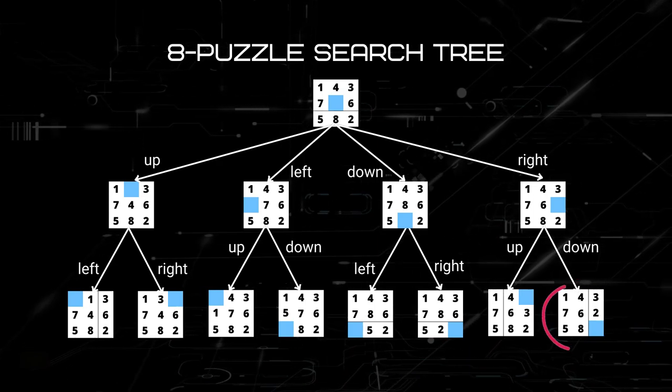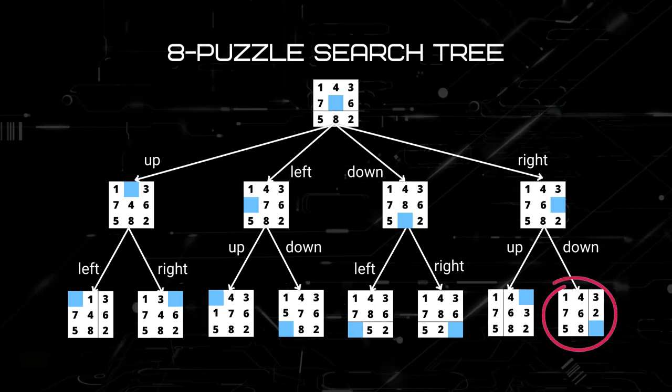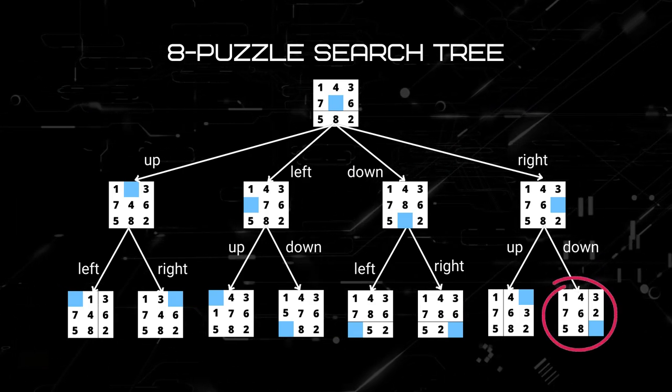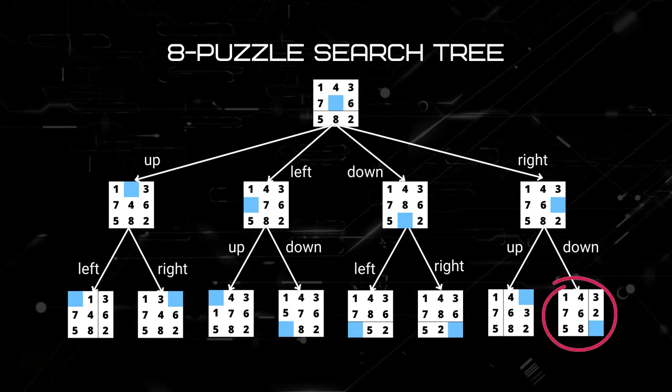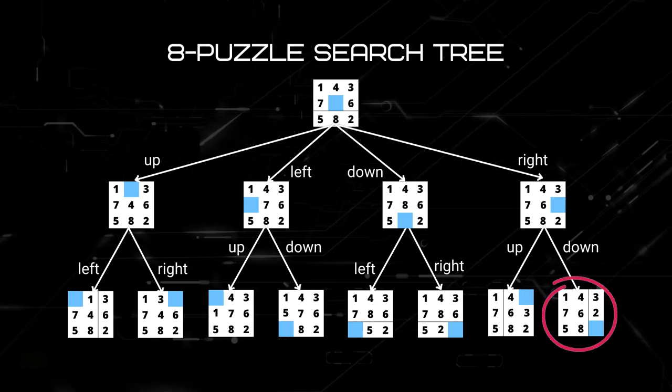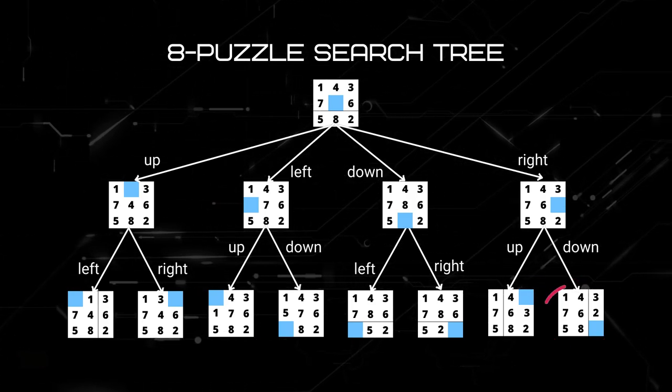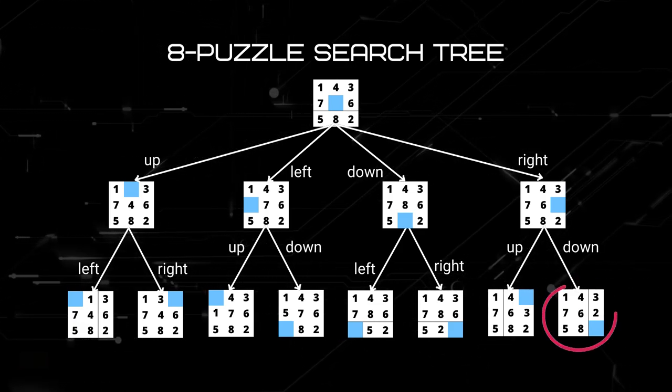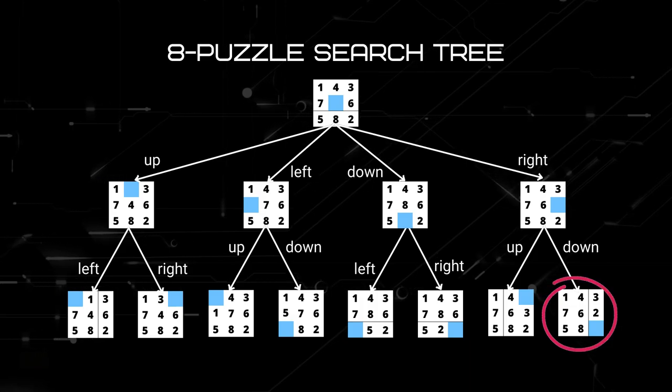So, this search tree shows the possible moves that we can make so that we can get to the intended goal state. In a more complicated problem, this search tree is going to be very, very huge. Imagine if we don't have AI and need to come up with all the possible solutions. It's going to take up all our time to be drawing all these trees.